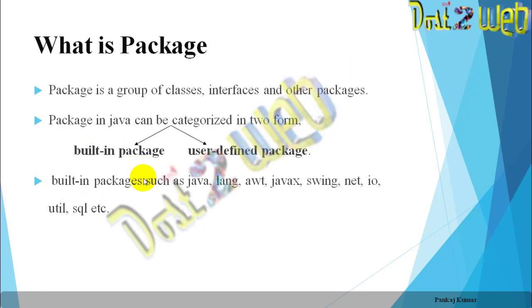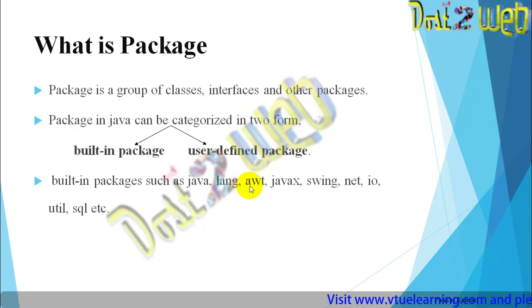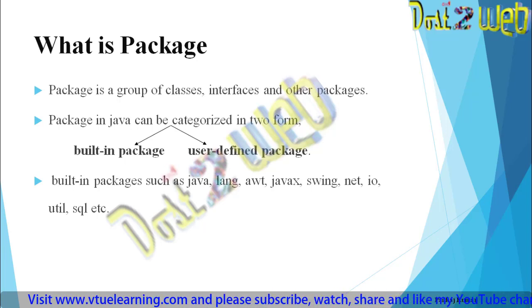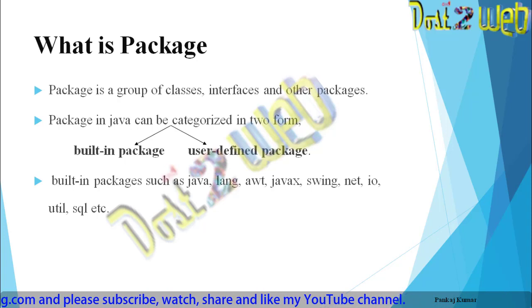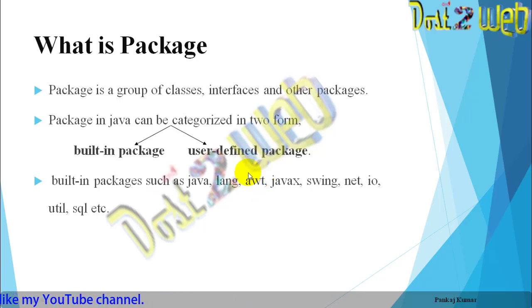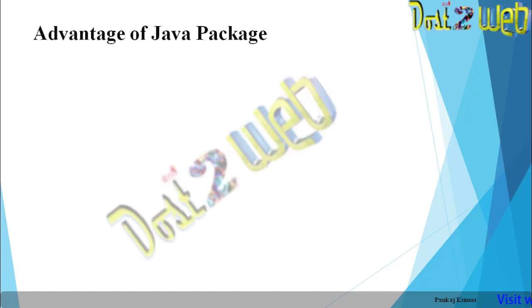Built-in packages include java.lang, java.awt, javax.swing, java.net, java.io, java.util, java.sql, and so on. You have already used these in several programs — for example, 'import java.io.*'. In applet programming, we need the AWT (Abstract Window Toolkit), which is also a built-in package. Now we will talk about user-defined packages.